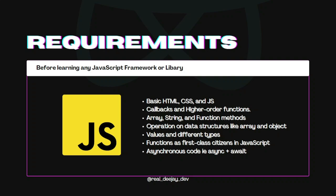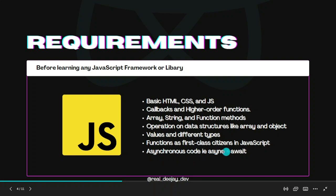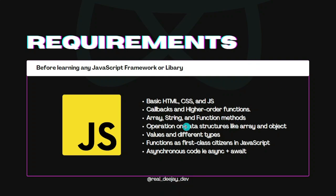You also need to know how to run operations on your data structures — how to manipulate arrays, how to manipulate objects. You need to know the different types and values, so if something expects a string, pass a string; if it expects a number or boolean, pass the right type. JavaScript functions are first-class citizens, so if you don't know asynchronous code, go watch our other videos on those topics.